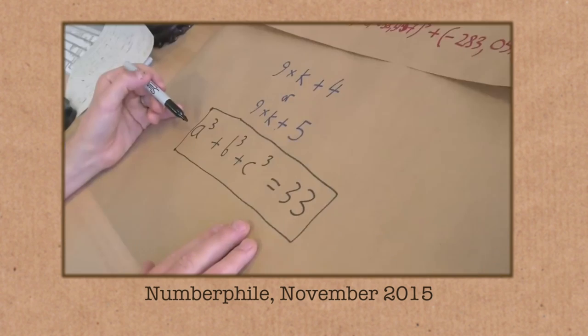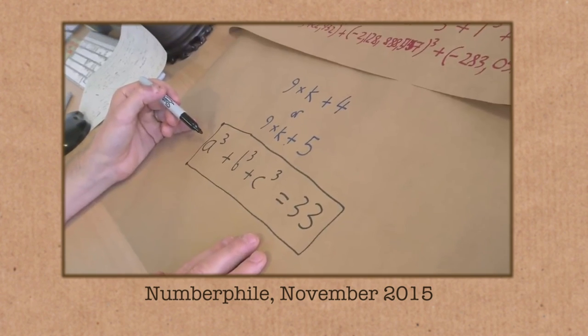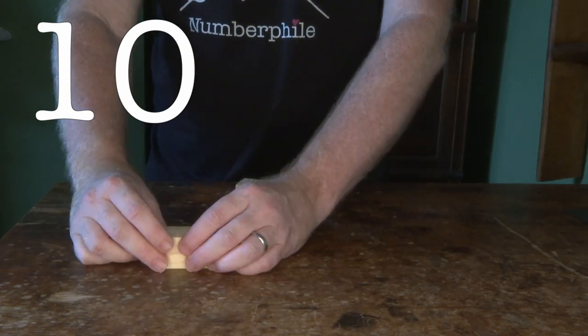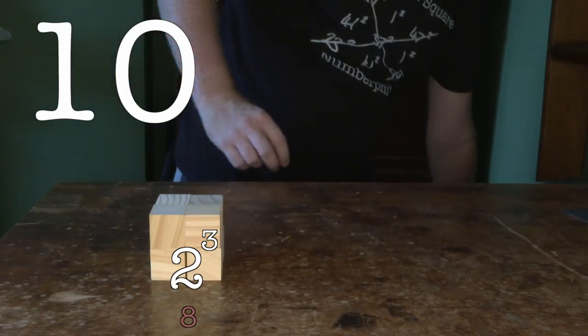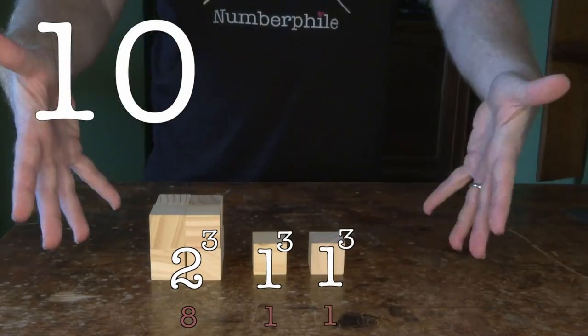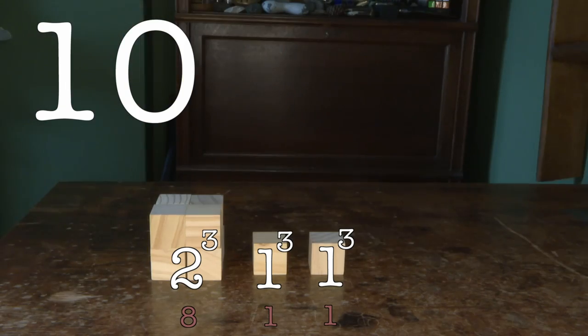Tim Browning told us how all numbers could be expressed as the sum of three cubes. For example, 10 can be represented as 2 cubed plus 1 cubed plus 1 cubed. There you go, the sum of 3 cubed numbers.